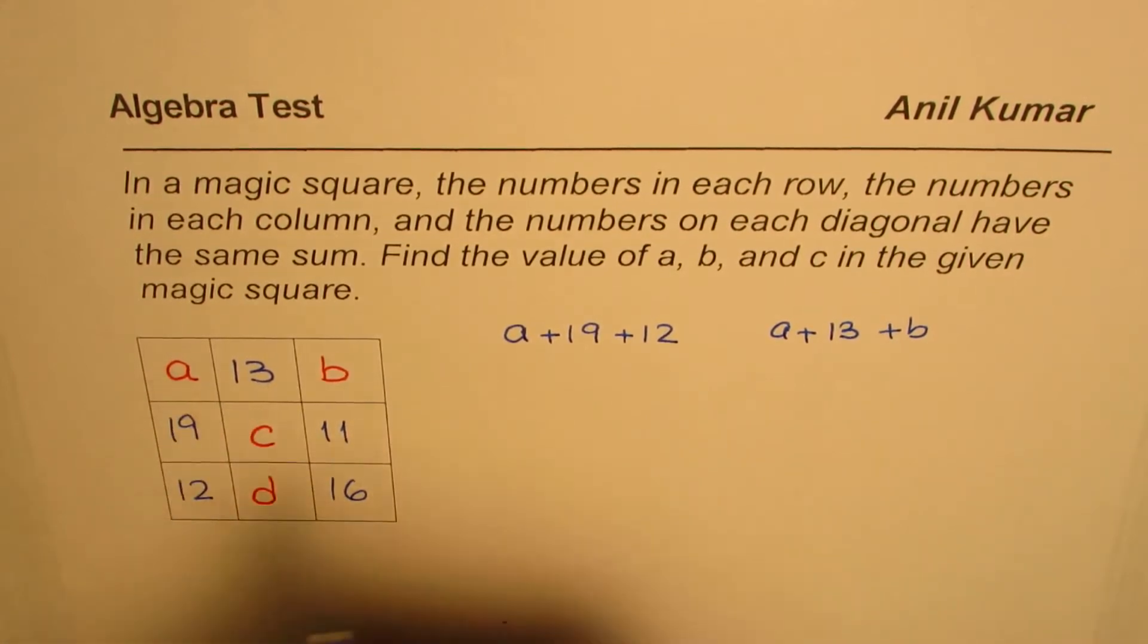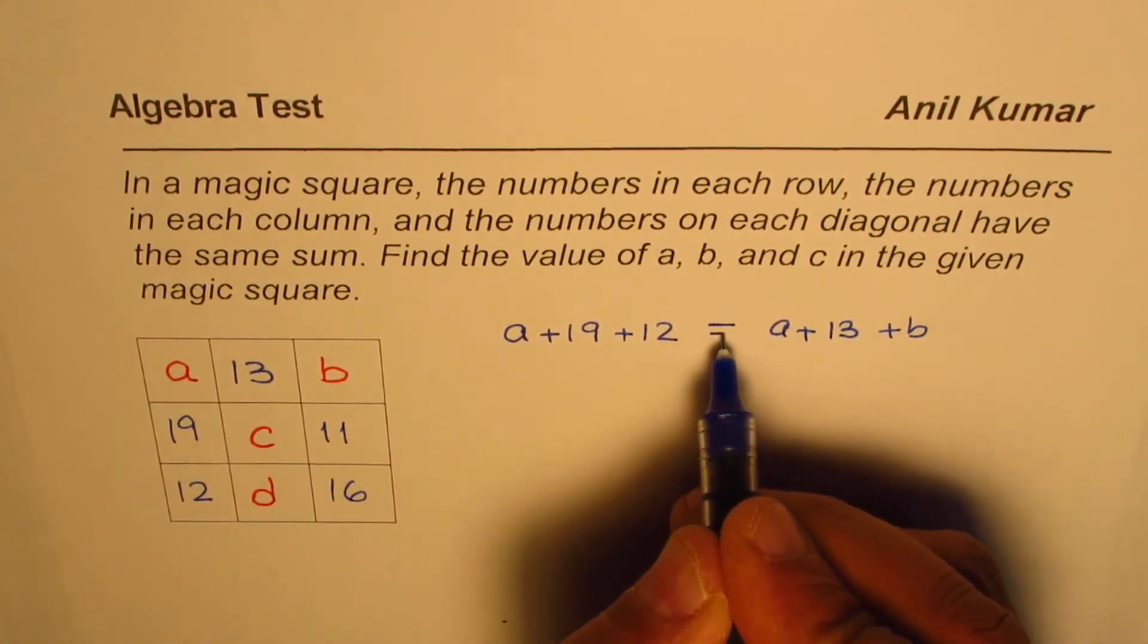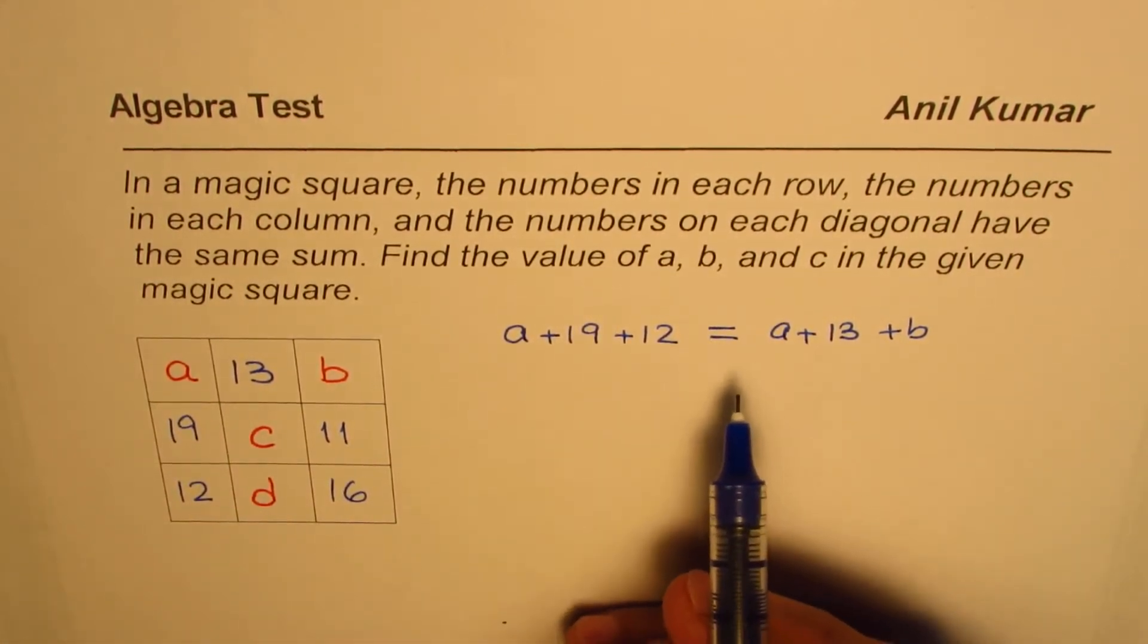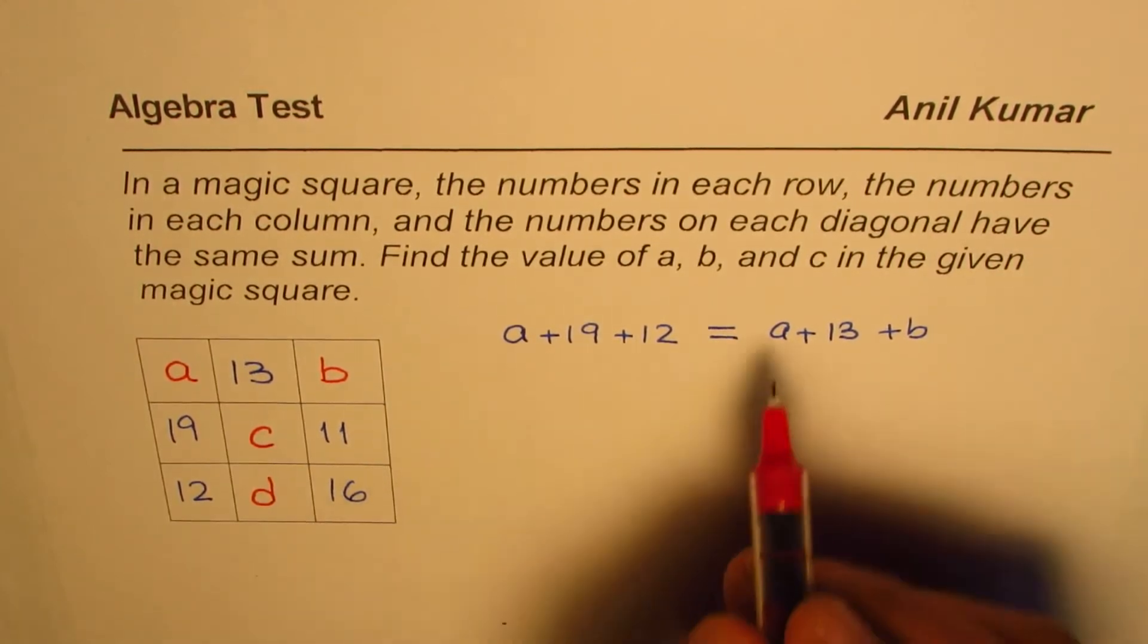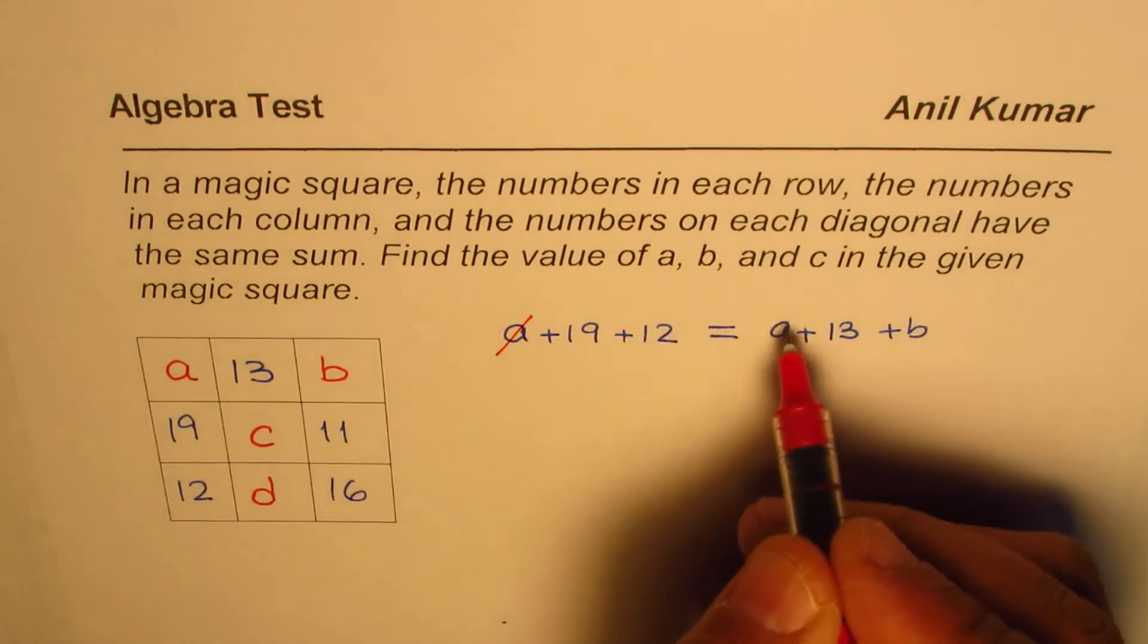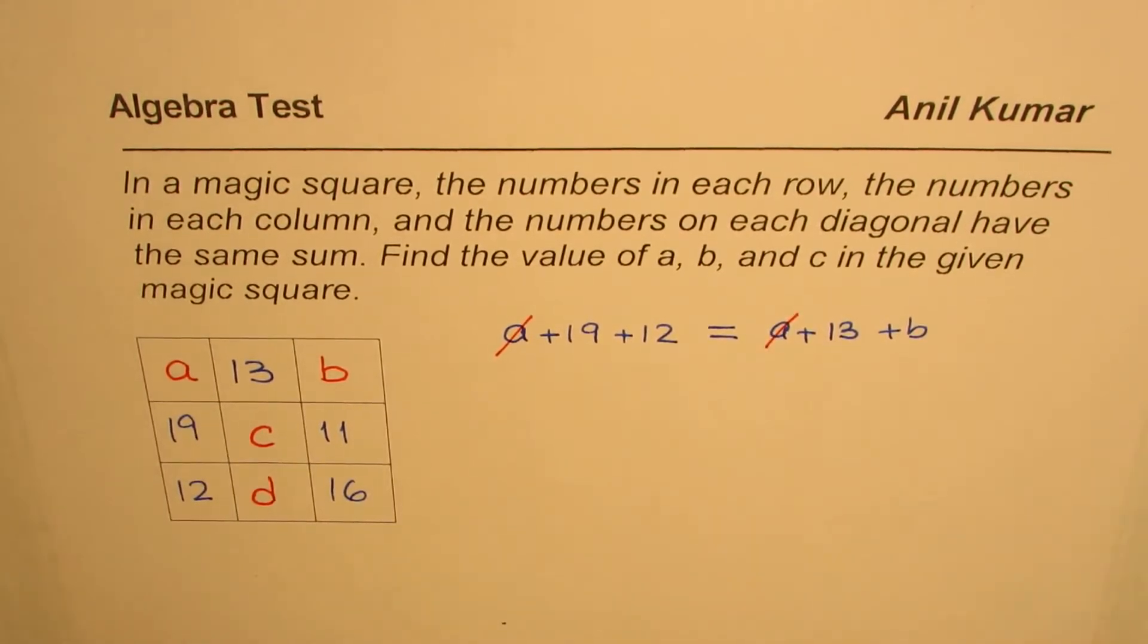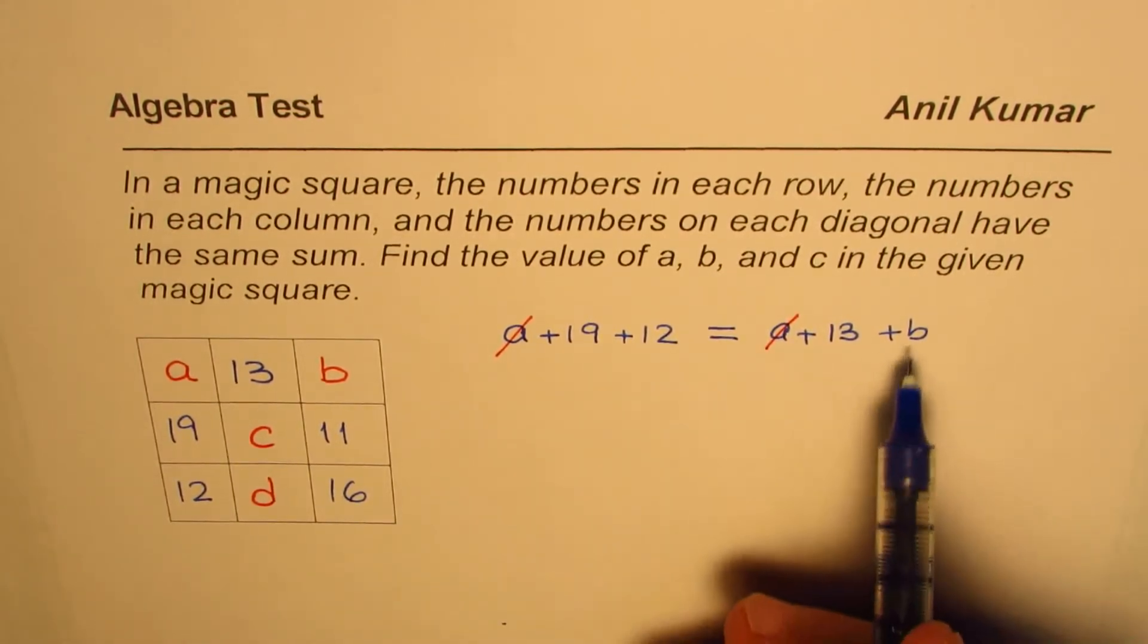Now, these two sums are equal, so we can write an equal statement since it is given that the sum of each row and column is exactly the same. Now we can solve this equation. We have A plus something, A plus something. We can take away A from both sides and then solve for B.